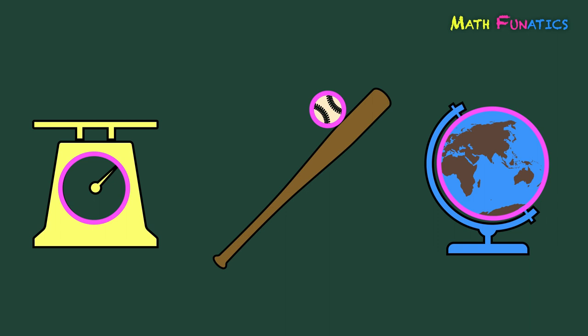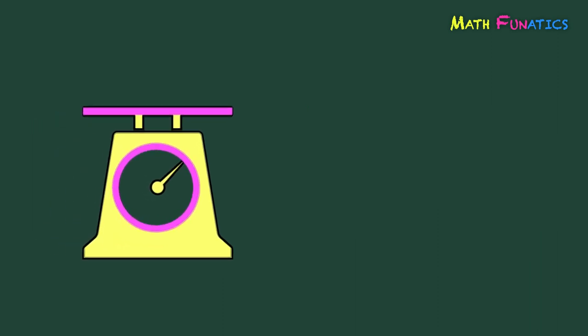Notice too that there are straight lines relatively positioned with the circle in each illustration. The straight line in the first figure is found above the circular part of the scale. The straight line in the second figure is found on the bat itself where the baseball touches it. And the straight line in the third figure passes through the circular globe. They are relatively positioned with the circles in different ways.